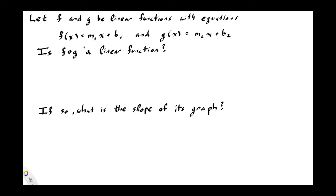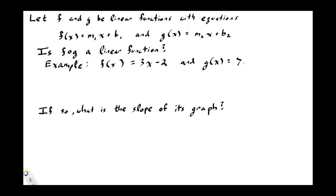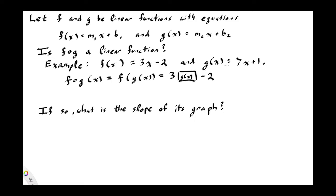Both f and g are linear functions, so the graph of f has slope m1 and y-intercept b1, and g(x) has slope m2 and y-intercept b2. To answer this question, I'm not going to do it by figuring out the general case — let's take a specific example. Let f(x) = 3x − 2 and g(x) = 7x + 1. Then f composed with g of x, by definition, means f of g(x), which means we put g(x) into the input box for f.